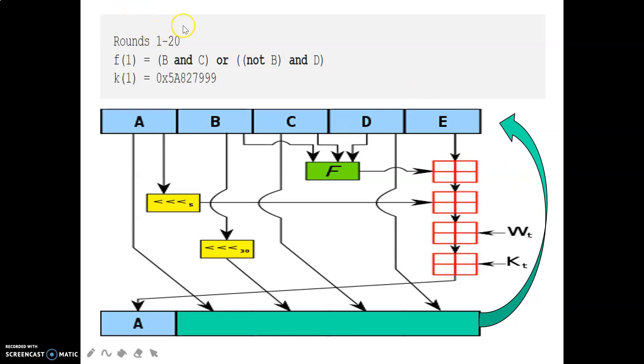So new A value calculated. For the first time we will talk about round 1 to round 20. In rounds 1 to 20, we will use function F1 and constant K1. Function F1 means B and C and not B and D. So this B, C, D is going to be sent as an input for this modulo add operation. Here we will add E value to the output of function F. This result will then be added with old A value left shifted S number of times.